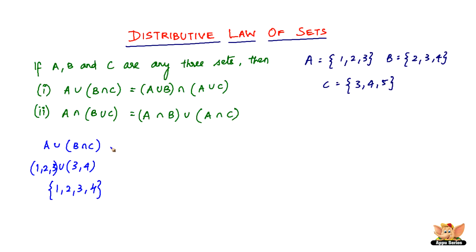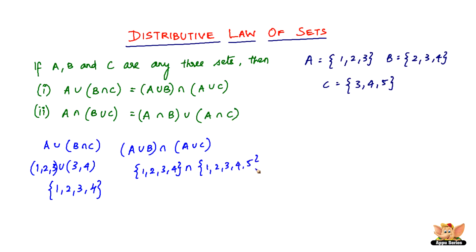Now let's check A union B intersection of A union C. A union B will be {1, 2, 3, 4}. A union C will be {1, 2, 3, 4, 5}. So the intersection of these two sets will be {1, 2, 3, 4} because 5 does not exist in the first set. Therefore, A union of B intersection C is equal to A union B intersection of A union C — both give {1, 2, 3, 4}.